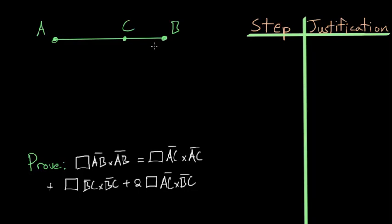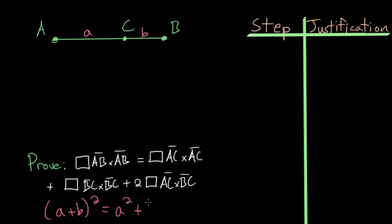If you want to consider this algebraically, we could call AC as A and BC as B. Then what we're trying to prove is that the square on AB — so (A + B) squared — is equal to A squared plus B squared plus twice the rectangle formed by A and B, or in other words twice the product of A and B, because the Greeks thought of multiplication as just forming rectangles. So proving this geometric statement will also prove this algebraic statement.